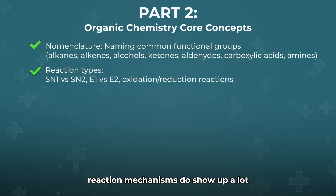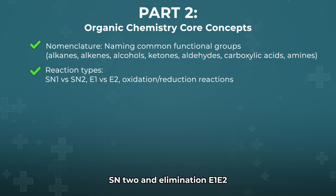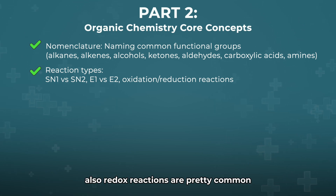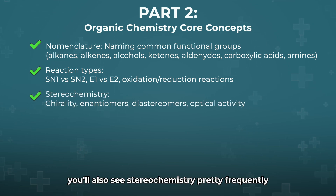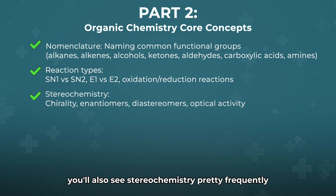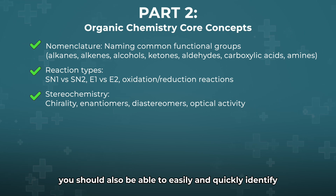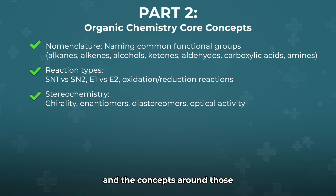Reaction mechanisms show up a lot, especially substitution — SN1, SN2 — and elimination — E1, E2. You want to make sure you understand the conditions, the intermediates, and the outcomes of each very clearly. Redox reactions are also pretty common, so make sure you can identify agents and outcomes confidently. You'll also see stereochemistry — questions on chirality, enantiomers, and diastereomers. You should be able to easily identify chiral centers and understand optical activity.